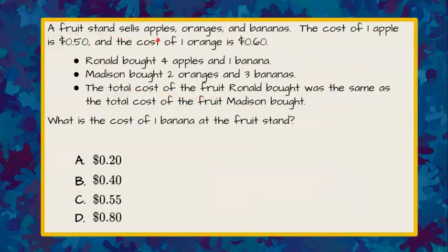A fruit stand sells apples, oranges, and bananas. The cost of one apple is 50 cents and the cost of one orange is 60 cents.